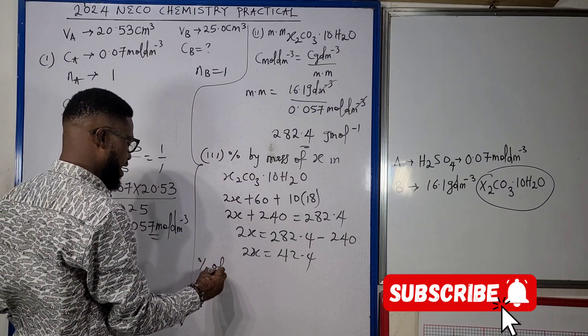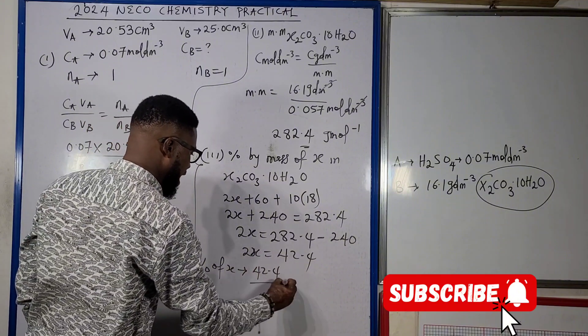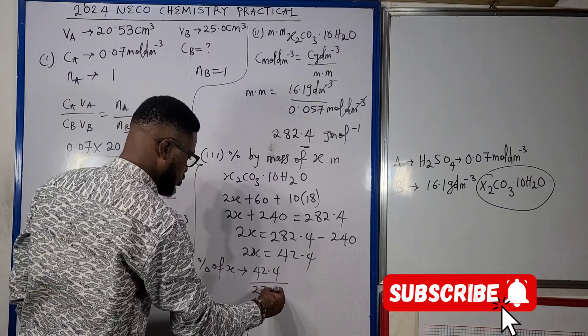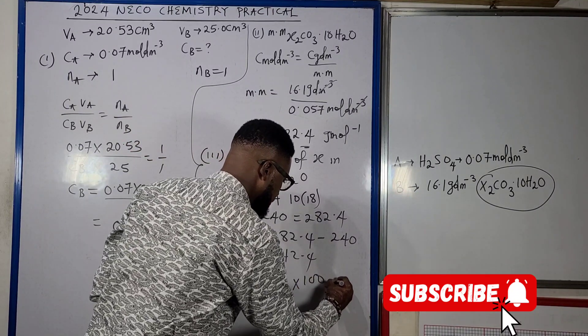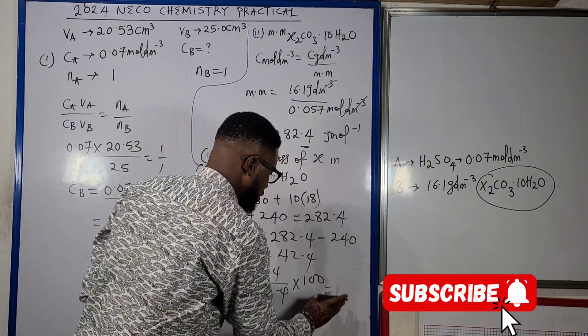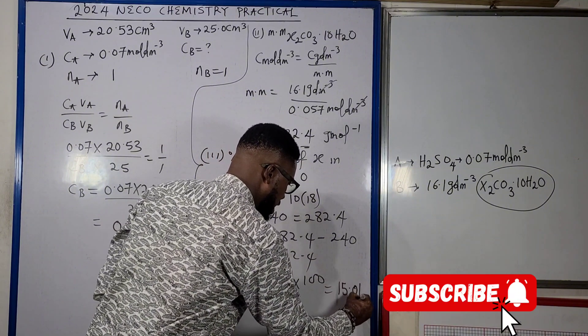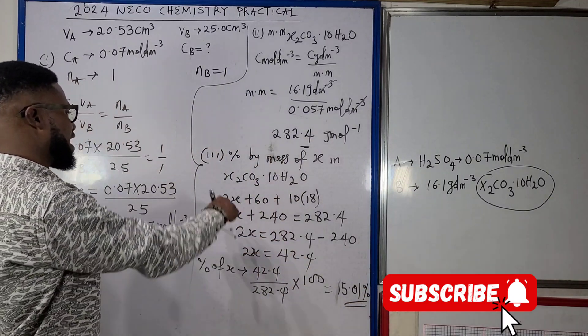So the percentage by mass of X, percentage of X here is going to be 42.4 out of a total of 282.4 times 100. So that will give us 15.01 percent, that is the percentage by mass of X.